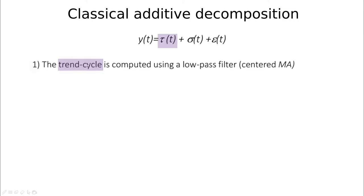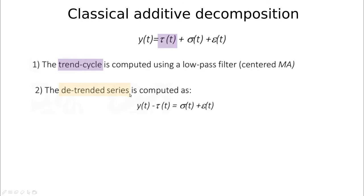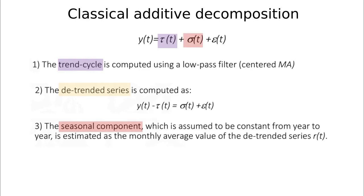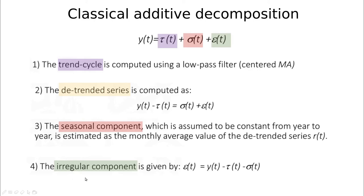Let's try to understand what is behind the `decompose` function in R. We get information about the trend cycle using a low-pass filter — specifically a centered moving average, which takes the average around each point. We then define the detrended series as the original series minus the trend cycle, leaving only periodicity and noise. From this detrended series we extract the seasonal component by averaging by the defined frequency — for example, if the series repeats monthly the frequency is 12, so we take the monthly average. The noise or remainder is simply the detrended series minus this seasonal average.